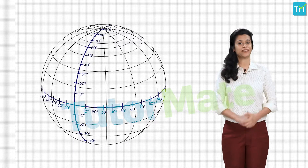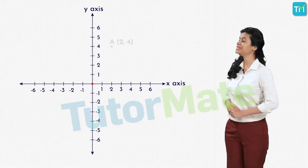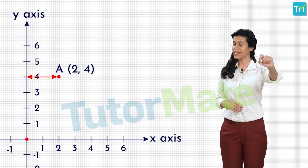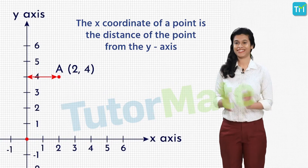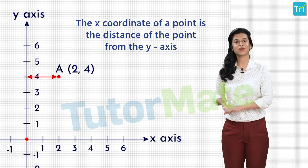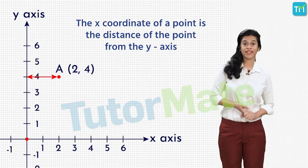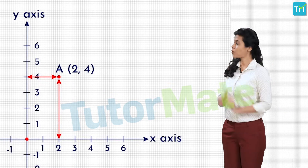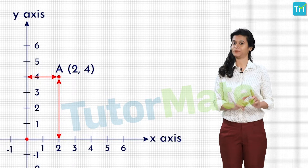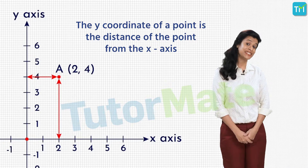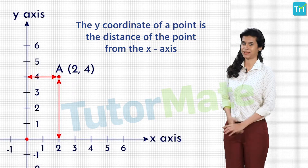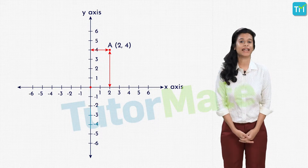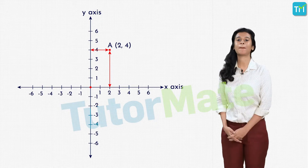Let's do a quick recap by looking at a figure with point A having coordinates (2, 4). The distance of point A from the y-axis is 2, which is the x-coordinate of A. So the x-coordinate of a point tells us the distance of that point from the y-axis. Similarly, 4 is the distance of A from the x-axis, which is the y-coordinate. So the y-coordinate tells us the distance of the point from the x-axis. In a nutshell: the x-coordinate is the distance from the y-axis, and the y-coordinate is the distance from the x-axis.